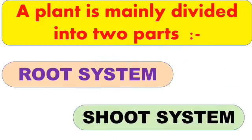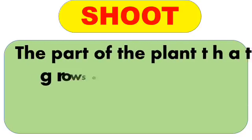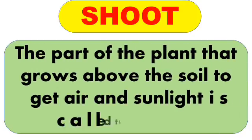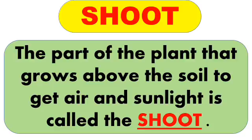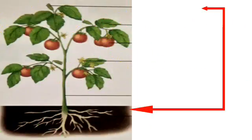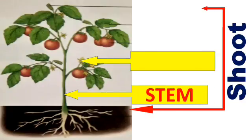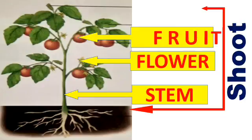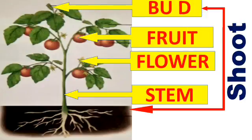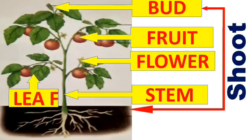The part of the plant that grows above the soil to get air and sunlight is called the shoot. This is the definition of shoot. The shoot system includes stem, flowers, fruits, buds, and also leaf.